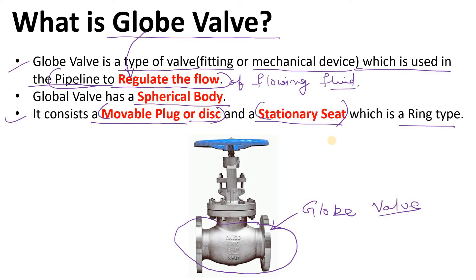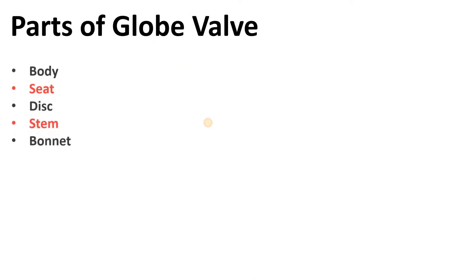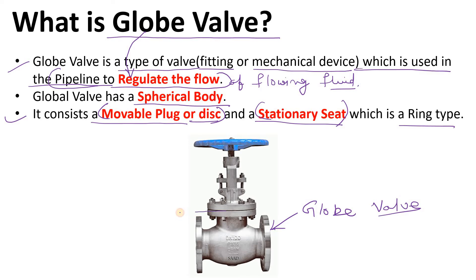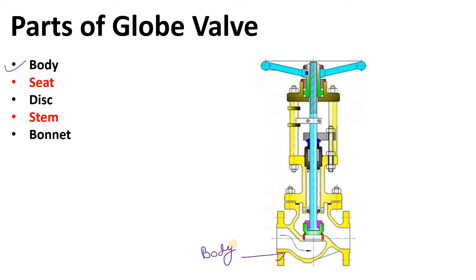Now we will discuss the parts of the globe valve. There are five main parts. The first is the body — this is the main pressure-containing structure of the valve. You can easily identify this body whenever you see this valve in an industry.